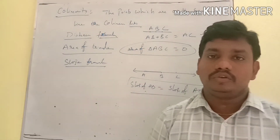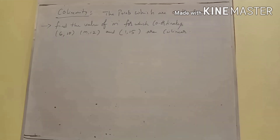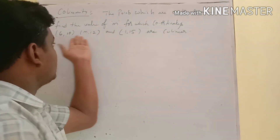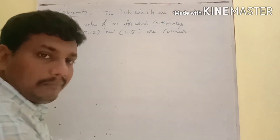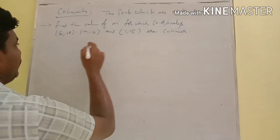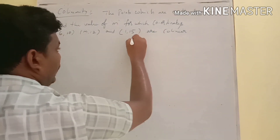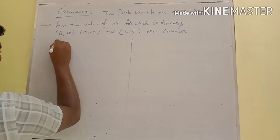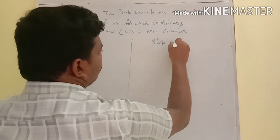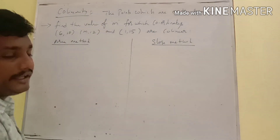Now let's find the value of m for which the coordinates (6, 10), (m, 12), and (1, 15) are collinear. We will use two different methods: the area method and the slope method.